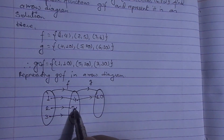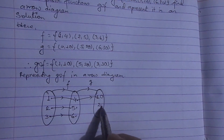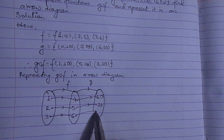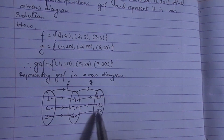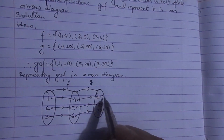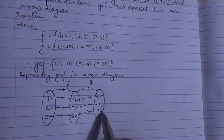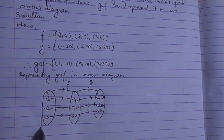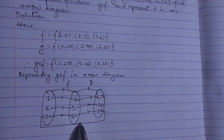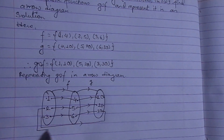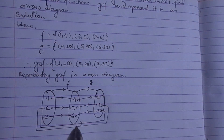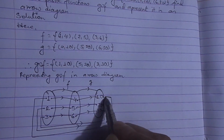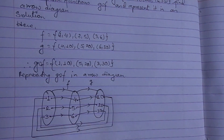5 maps to 20 and 6 maps to 30. It means finally 3 is linked with 30, 2 is linked with 20, and 1 is linked with 10.